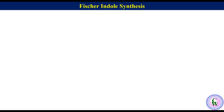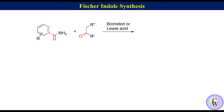In Fischer indole synthesis, an aryl hydrazine reacts with an alpha-hydrogen-containing aldehyde or ketone in the presence of a Brønsted acid or Lewis acid in an appropriate solvent under heating conditions to produce indole.